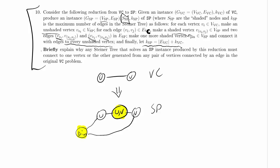Briefly explain why any Steiner tree that solves an SP instance produced by this reduction must connect to one vertex or the other generated from any pair of vertices connected by an edge in the original vertex cover problem. So here's a pair of vertices connected by an edge, and it's saying in the original vertex cover problem,